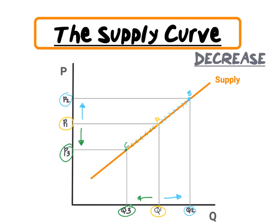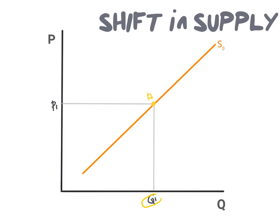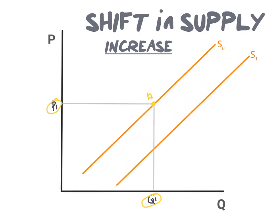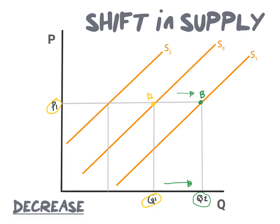Now let's proceed to a change in supply, where we are going to shift our entire supply curve either to the right or to the left. Our starting point will be at point A with price P1 and quantity Q1. First, let's look at an increase in supply. When we increase our supply curve, this means it will shift to the right. Our new supply curve will therefore be S1, illustrated as a rightward shift. At point B, our price will remain at P1 and our new quantity will move from Q1 to Q2, illustrating an increase in quantity. A decrease in supply is illustrated as a leftward shift in our supply curve. The new supply curve is therefore S2 and our new quantity will decrease from Q1 to Q3.